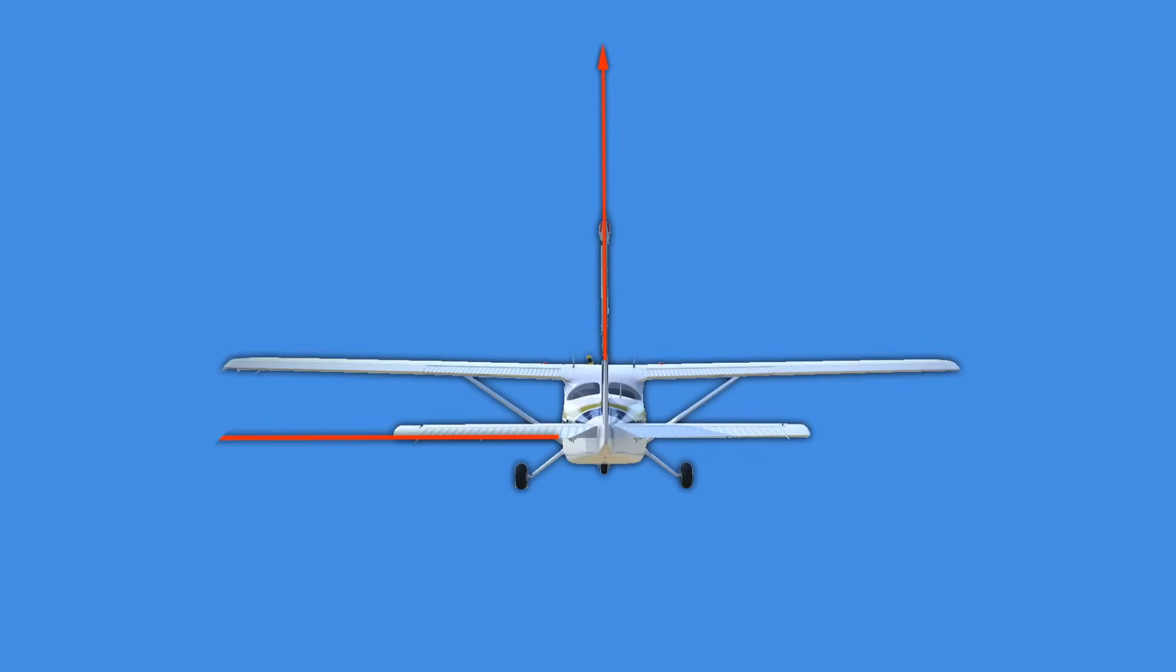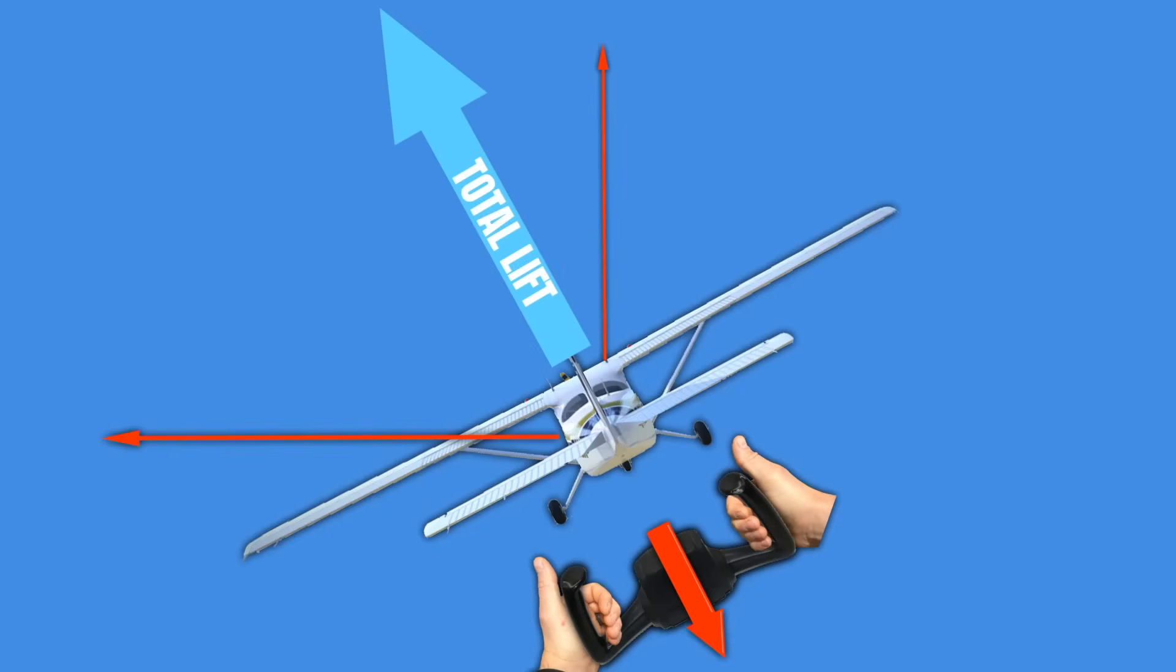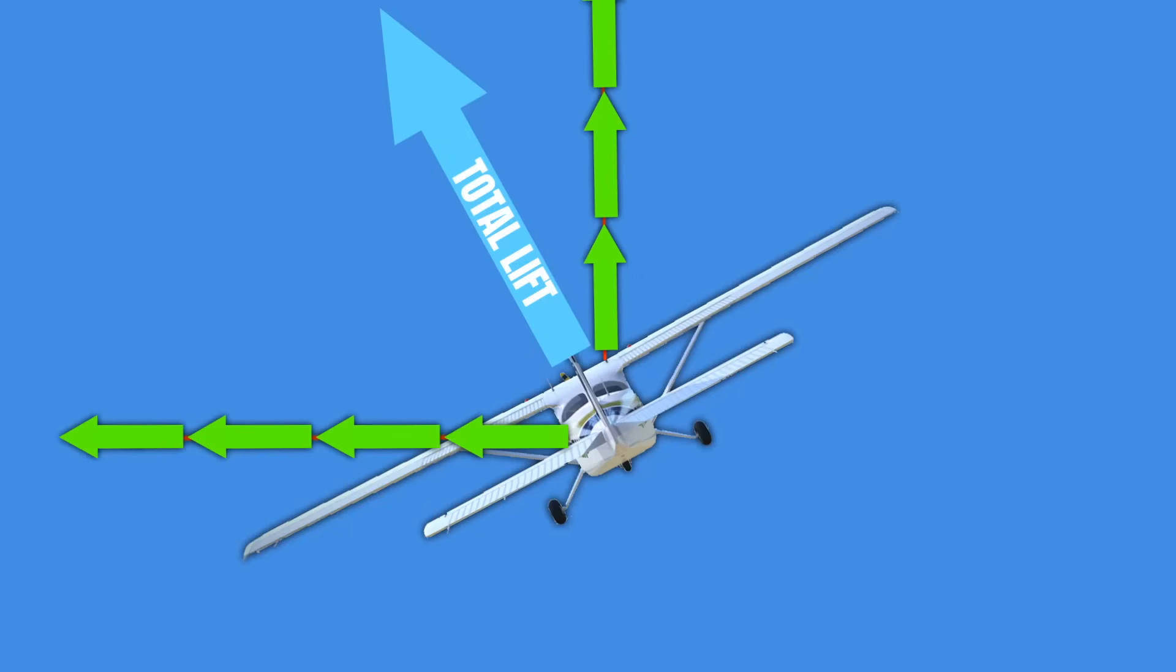Once again this is important to remember you need to roll and pull to get the airplane to turn properly without descending. Now there's one more thing that pulling back on the yoke does. Not only does this increase our vertical and horizontal lift it also increases the force of inertia acting on the weight of our airplane. We call this our load factor.